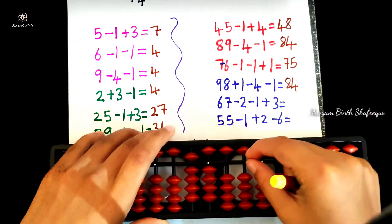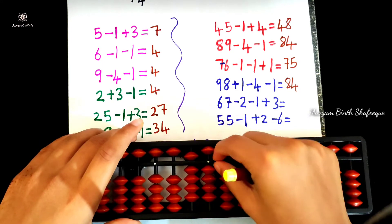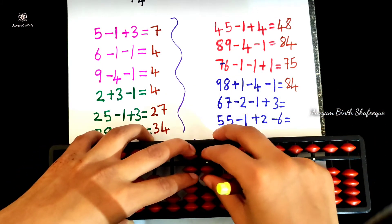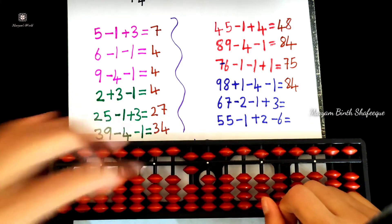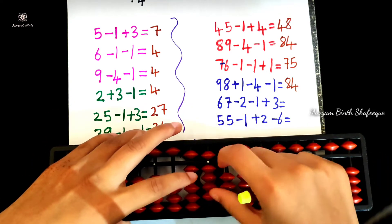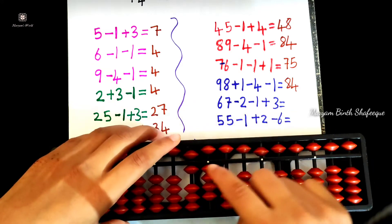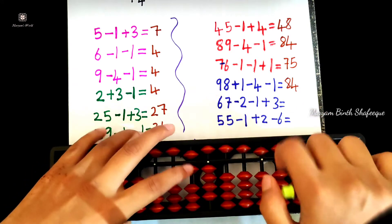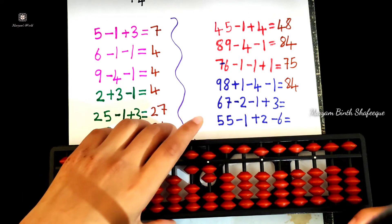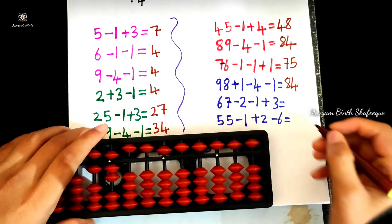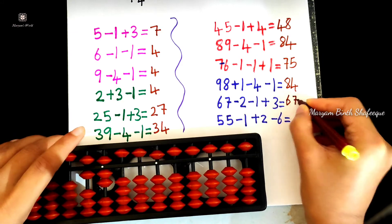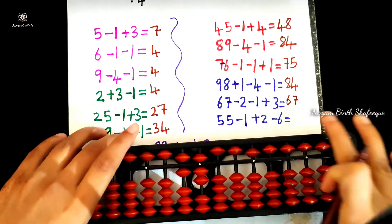Next is AM. 67, 67. Minus 2, minus 1. Minus 1 equals plus 4, minus 5. Plus 3. Plus 3 equals plus 5, minus 2. 60, 70. Next.